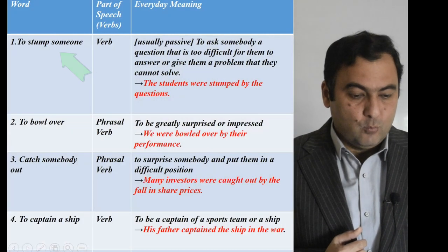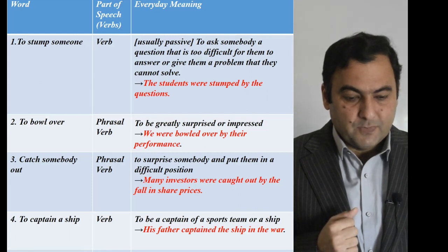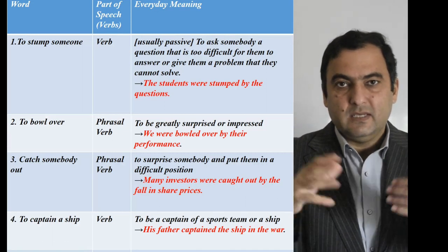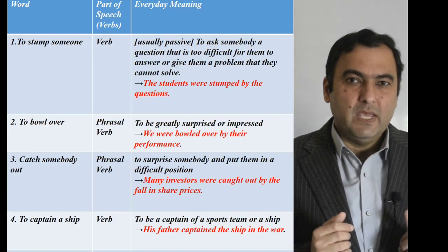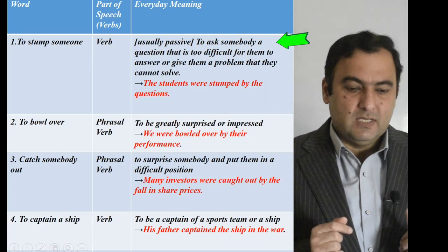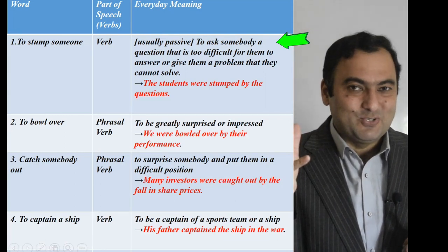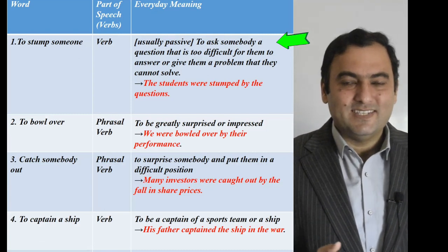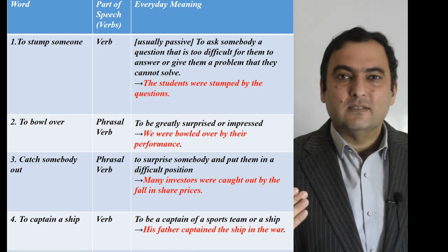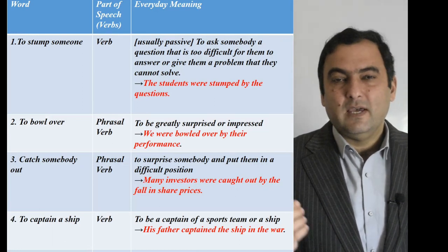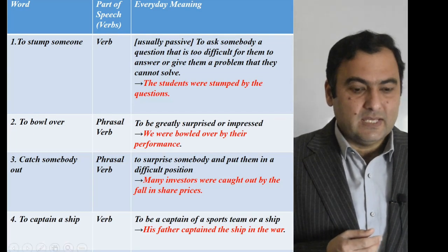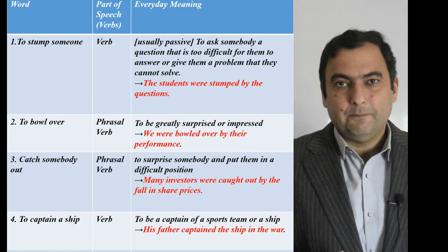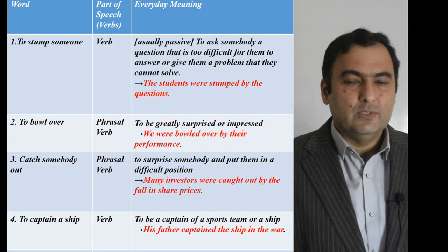The first verb is to stump someone. It's a verb usually used in passive form. In cricket, a batsman is stumped — that is, dismissed; his or her innings is over. But in day-to-day conversation, stump means to ask somebody a question that is too difficult for them to answer. For example, you asked your teacher a question and the teacher doesn't know — so you say the teacher was stumped by the question. Or a journalist asked a politician a question and the politician has no answer — the politician was stumped. We could also say the students were stumped by questions in the exam.